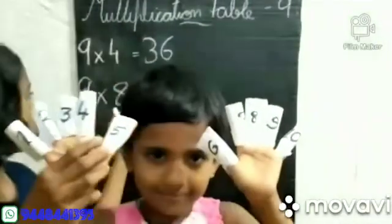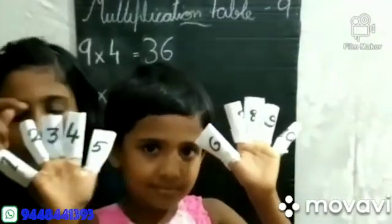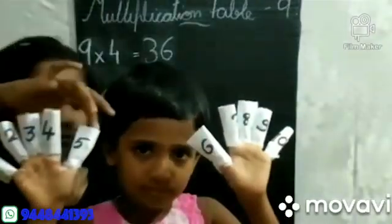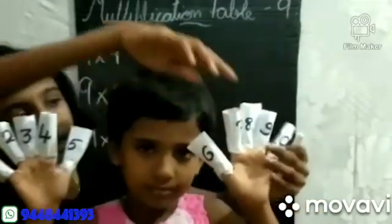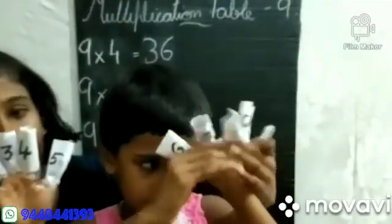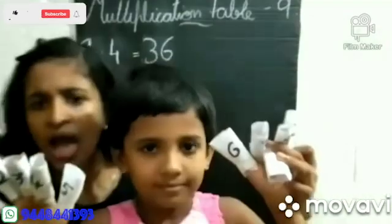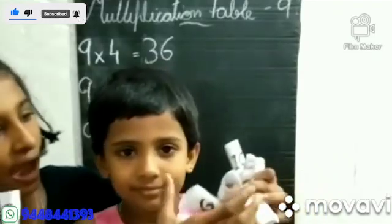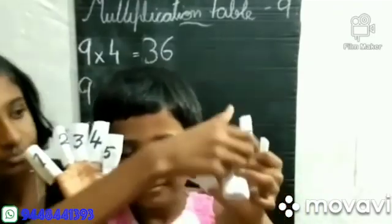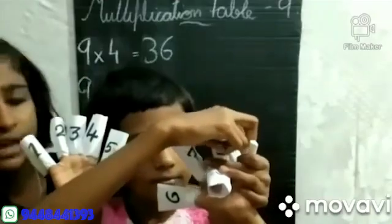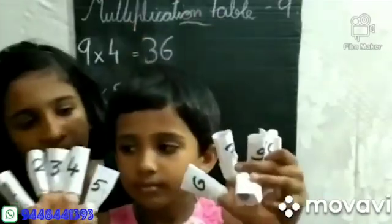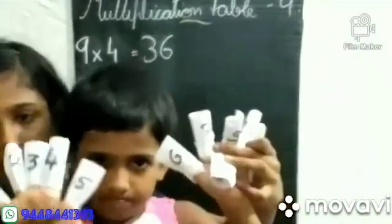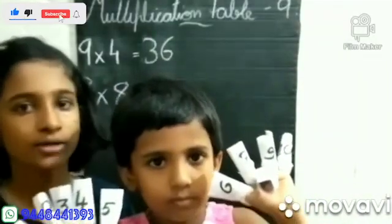Next, 9×8. We need to hold the 8th finger: 1st, 2nd, 3rd, 4th, 5th, 6th, 7th, 8th. This is the 8th finger, so we need to hold this. There are 5 fingers left on this hand and 2 fingers left on the other side. We add 2 to 5, so 5 becomes 7. And there are 2 left. So we got the final answer of 72.